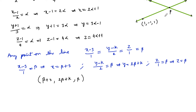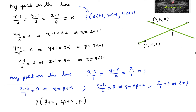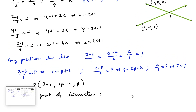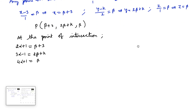Since these two lines are intersecting at a point P, the coordinates of P must be equal on both lines. So we equate: 2α+1 = β+3, and 3α−1 = 2β+k, and 4α+1 = β.